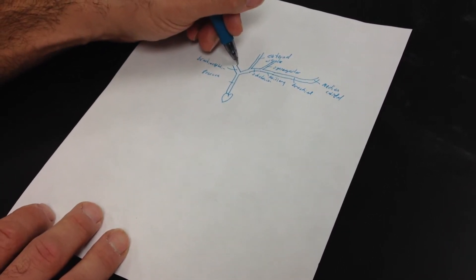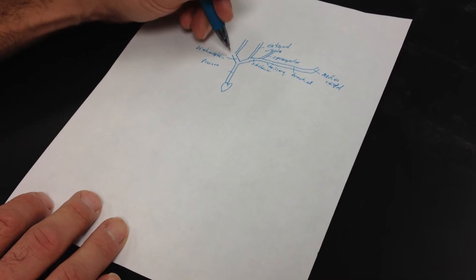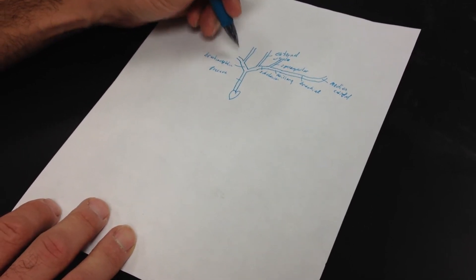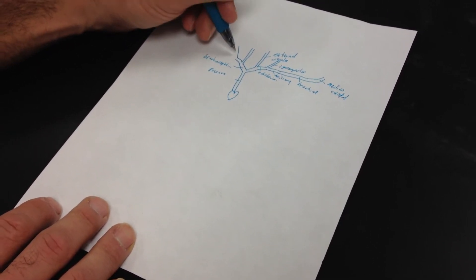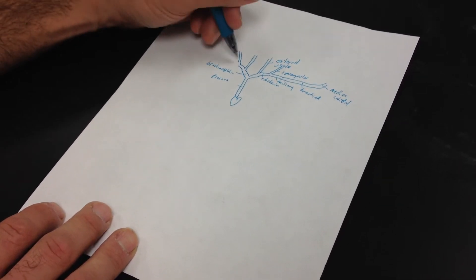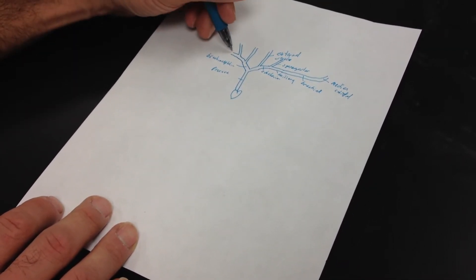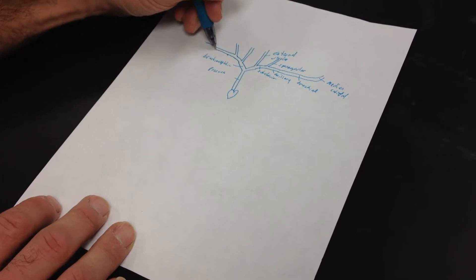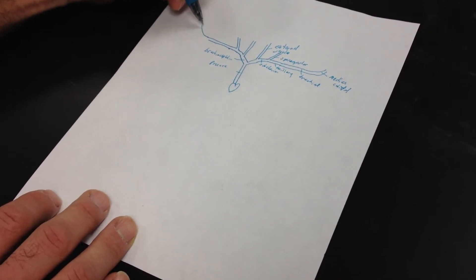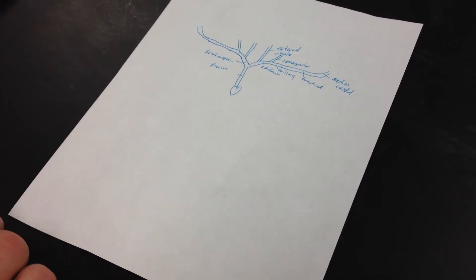Okay, and then we have the same thing going on on this side. We have our branching to the external jugular. We have our branching to the subclavian. We have our branching to the subscapular and the axillary. And then the axillary continues out and becomes the brachial. And then we have our median cubital right there.